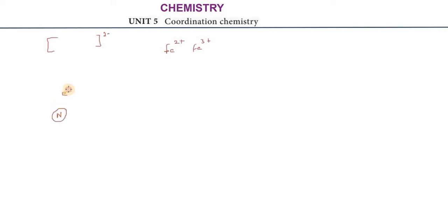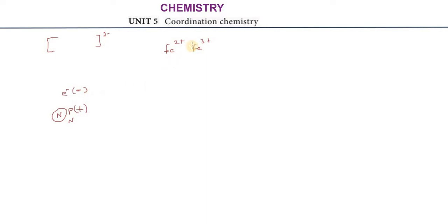The electron is negative. The nucleus is made up of protons and neutrons. Proton is positive charge. Neutron is neutral charge. Electron is negative charge.